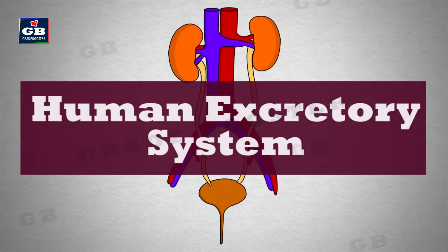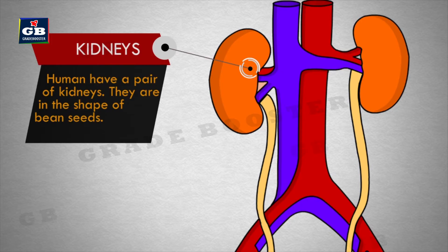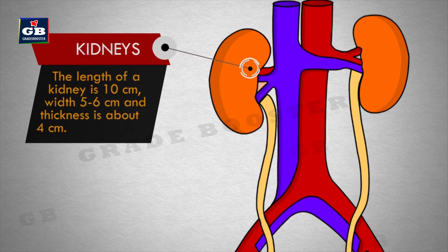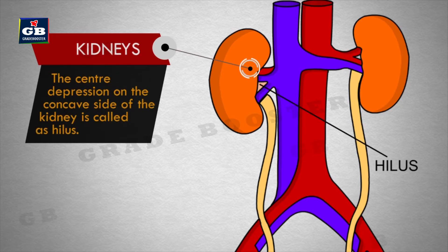Let us see the structure and functioning of different parts of the human excretory system. Humans have a pair of kidneys. They are in the shape of bean seeds. The right kidney is a bit lower than the left kidney. The length of a kidney is 10 centimeters, width 5 to 6 centimeters, and thickness is about 4 centimeters. Its outer surface is convex in shape, and the inner surface is concave. The center depression on the concave side of the kidney is called hilus.